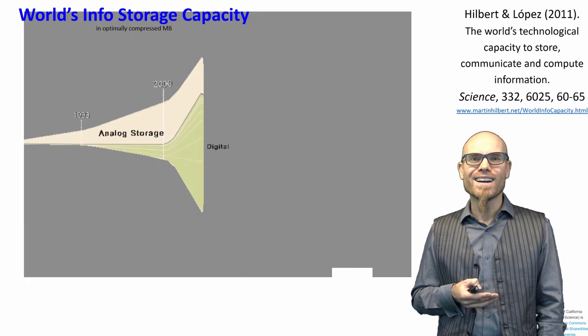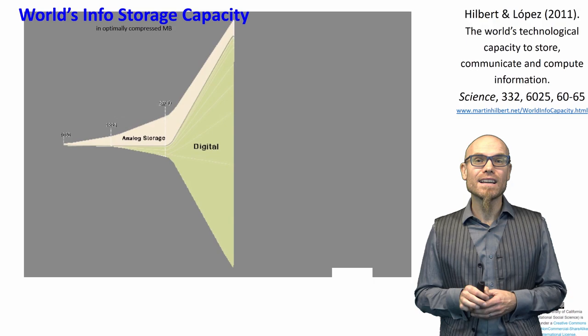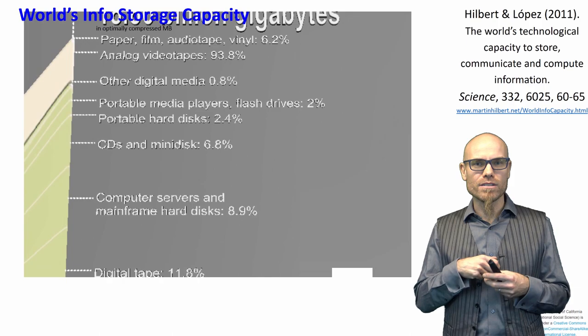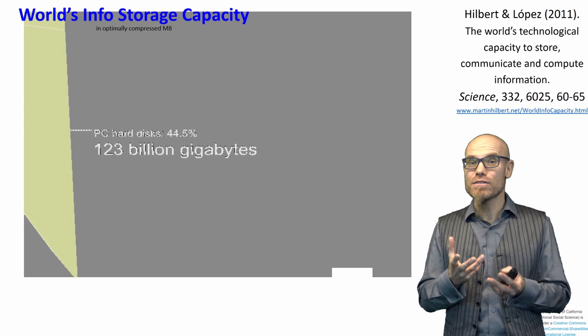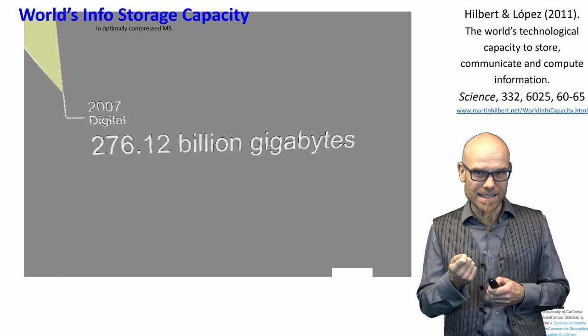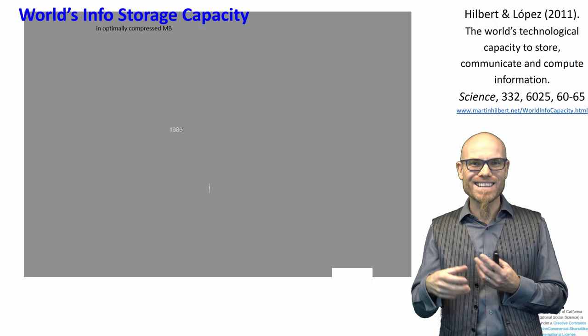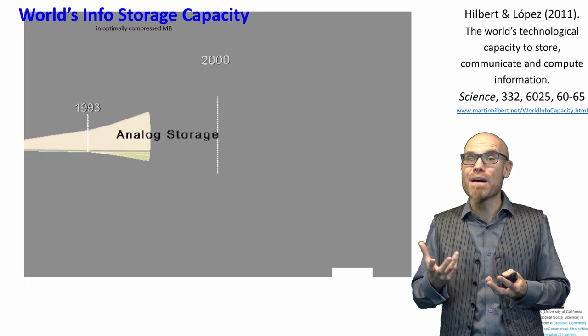We estimate that in the year 2002, for the first time the world was able to store more digital than analog information. We still have papers around, but by now digital information counts for more than 99% of all the information we actually have. When it's in digital format, we can also analyze it in the same format — digitally stored, we can compute it — and there you already see the idea of computational social science. We just dig into that and see what we can learn about society.